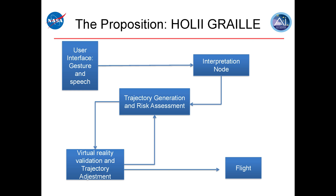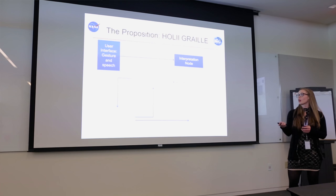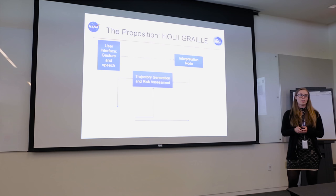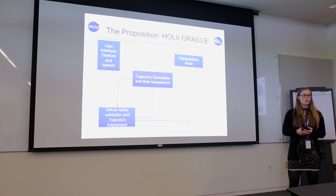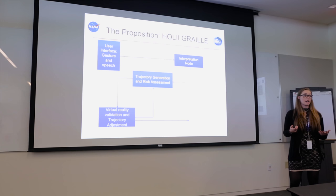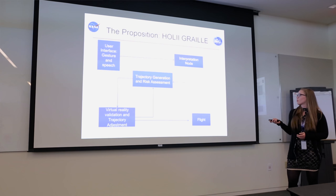That's where the Holy Grail comes in. As Jeremy mentioned, the flow of information looks like this: the user interface combines gesture and speech input, entering into an interpretation node that sends information to trajectory generation and risk assessment. That enters a feedback loop with virtual reality for confirmation or real-time adjustment of the trajectory, feeding back and forth until the user specifies the desired trajectory, at which point the system proceeds to flight.